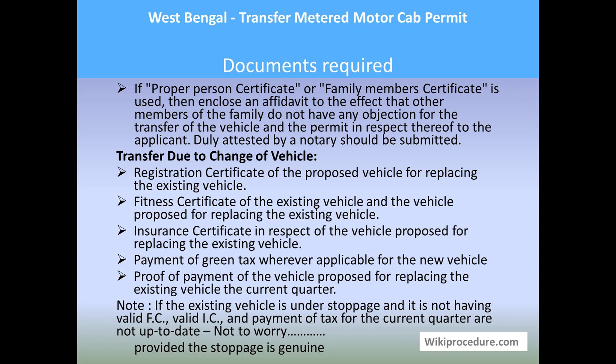In case the transfer is due to a change of vehicle, you need the registration certificate of the proposed new vehicle, fitness certificate of both the existing and new vehicle, insurance certificate for the new vehicle, payment of green tax wherever applicable for the new vehicle, and proof of payment of tax for the vehicle proposed for replacing the existing vehicle for the current quarter. Note: if the existing vehicle is under stoppage and does not have a valid fitness certificate, valid insurance certificate, or current quarter tax payment, don't worry about the transfer as long as the stoppage is genuine — meaning the vehicle was not stopped by the government due to illegal usage or penalties.